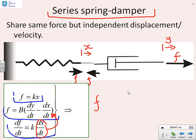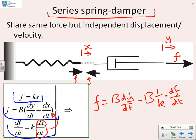So what I can now write is f equals b dy dt minus b, and this should be dx dt, but dx dt can be written as 1 over k into df dt. So you'll see this model is non-simple, so series arrangements for mechanical systems tend to be a little bit more awkward than parallel arrangements, and that's beyond what we want to cover.